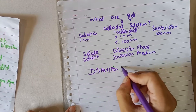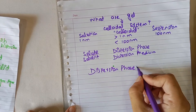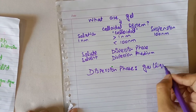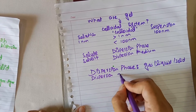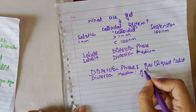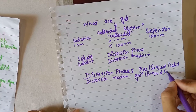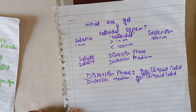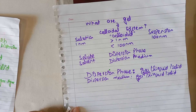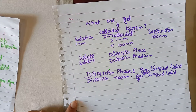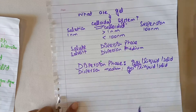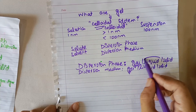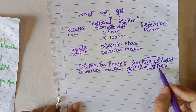In other words, the dispersion phase can be either a gas, liquid, or solid phase. Depending upon the particular nature or phase of the dispersion phase or dispersion medium, we can classify colloids into different types — such as sol, gels, and emulsions. In this lecture, we are particularly focusing on gels.